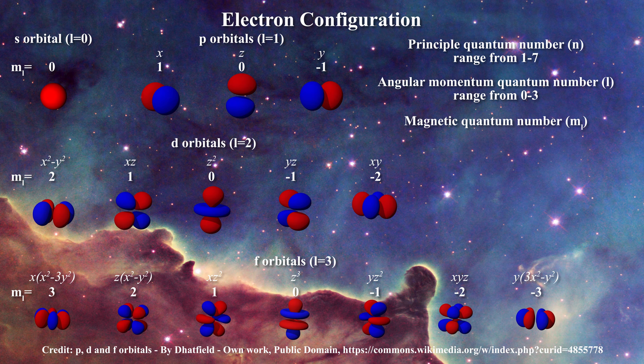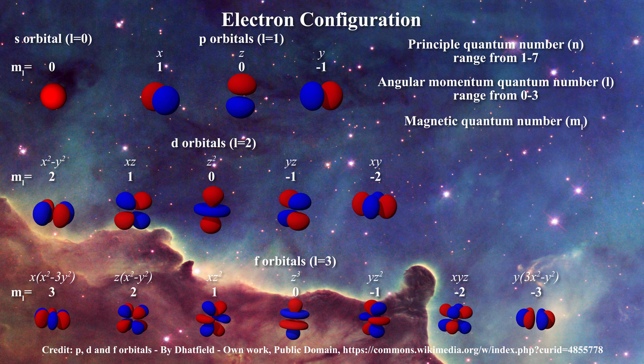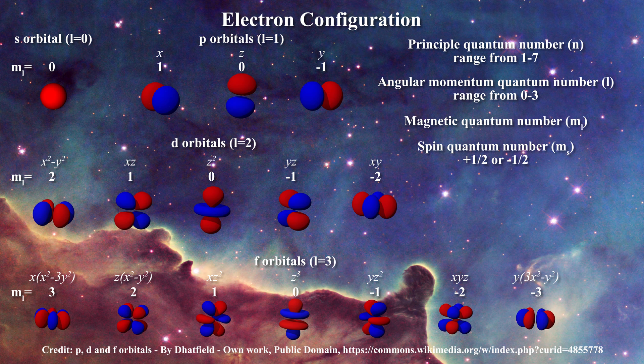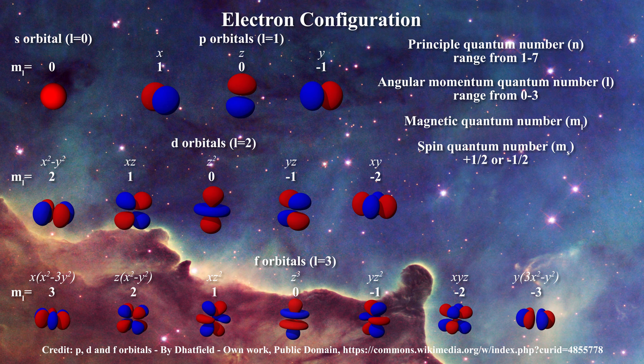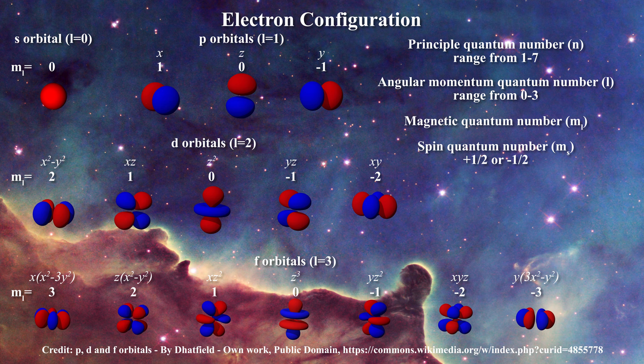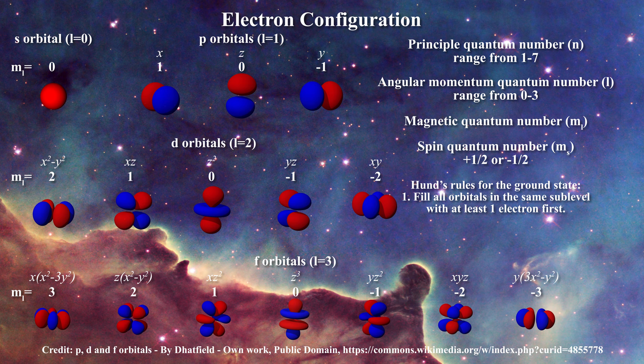This becomes important when describing what term symbols represent. Note that each orbital can only hold two electrons, and these two electrons are characterized by the electron spin quantum numbers m sub s. When electrons are paired within an orbital their electron spin quantum numbers must have opposite signs. There is a governing convention when determining the ground state of an atom: within a given sublevel every orbital must be singly occupied before any electrons are paired.